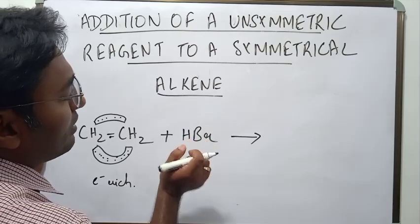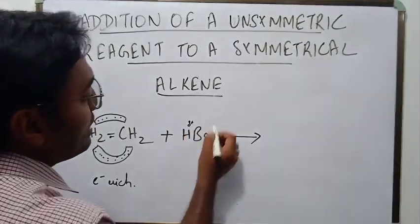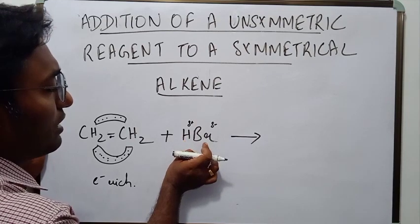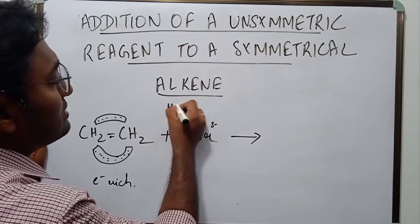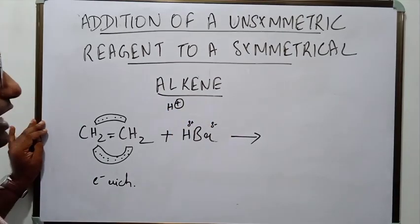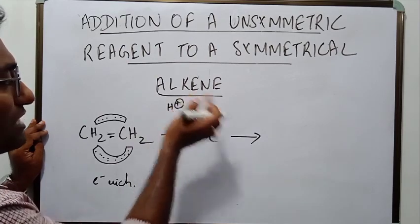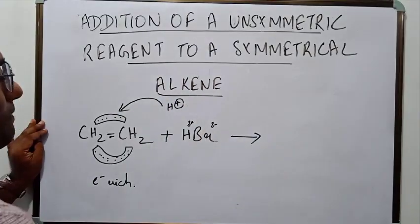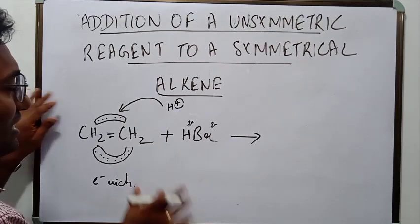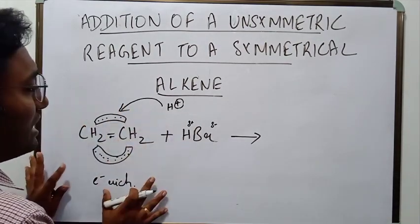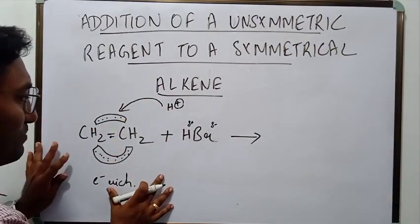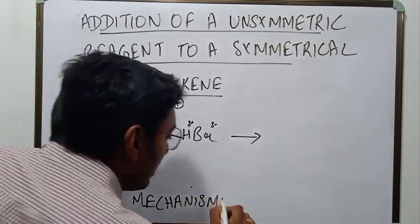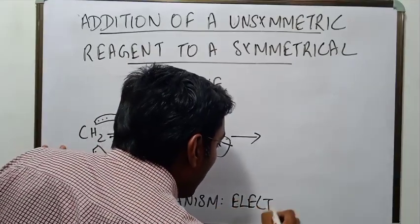Now take the case of HBr. HBr is a polar compound. There is a significant dipole between H and Br, and as a result H is positive and Br is negative. Because of the high dipole that exists between H and Br, they are bound to dissociate and H+ is bound to be released. H+ is an electrophile — it has a positive charge and loves electrons — so it would attack the pi bond of ethene. The mechanism of this reaction is electrophilic addition.